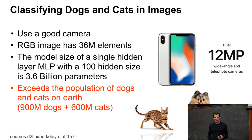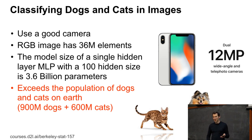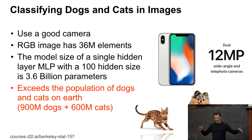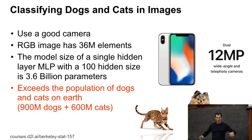Let's start with something very trivial. Suppose you have a good camera — like maybe this phone here, which has a 12-megapixel camera. It actually has two cameras inside, but that's a trivial detail. So it's 12 megapixels. And if you have red, green, and blue, that's 36 million numbers. So if I want to build a multi-layer perceptron with 100 hidden units — just a single hidden layer — well, then that's about 3.6 billion parameters, which is 36 million times 100.